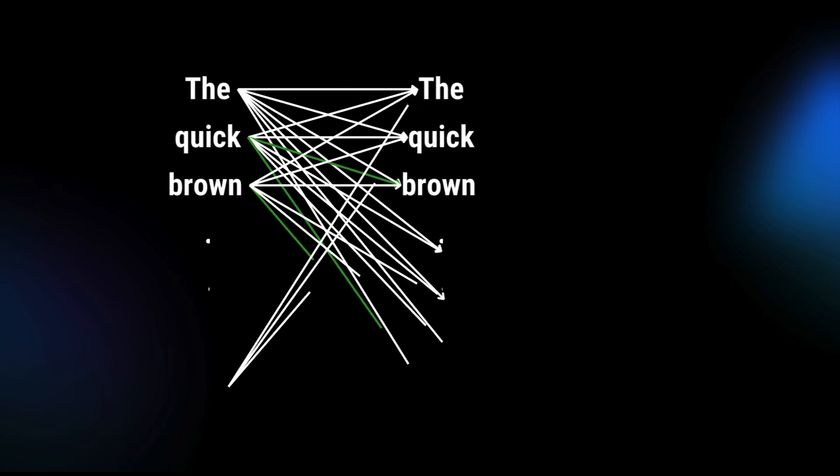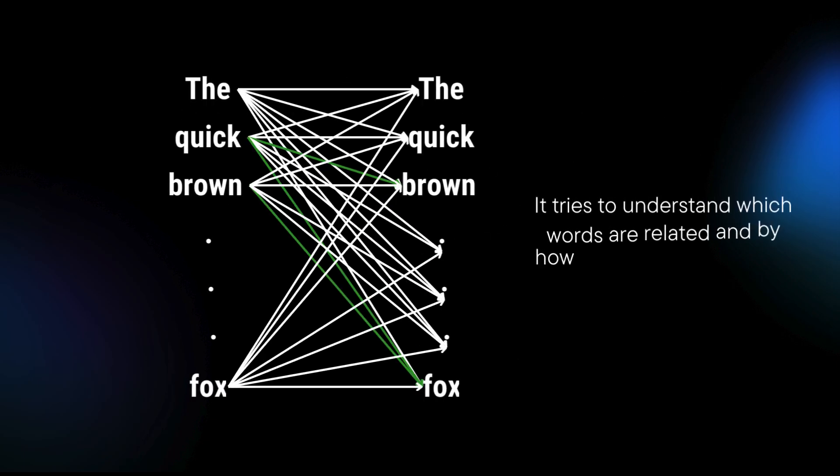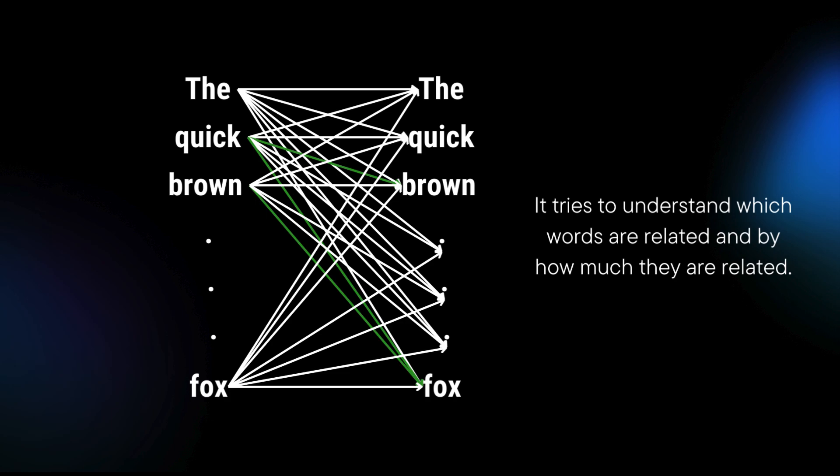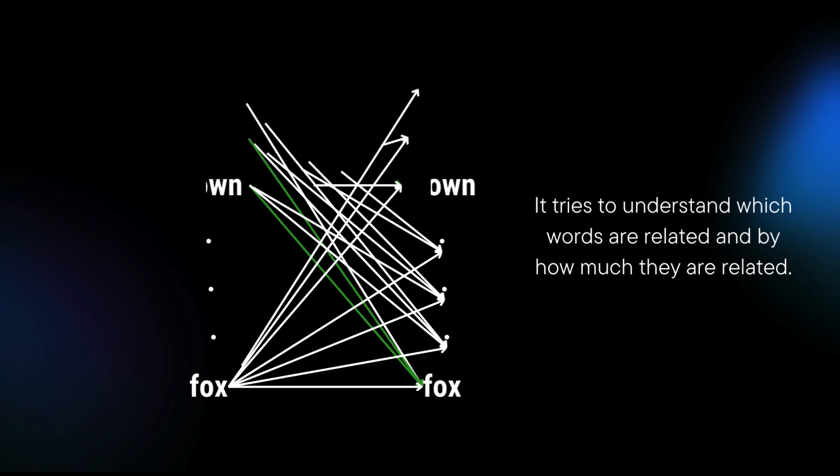One key component is the Self-Attention Mechanism, which enables the model to consider the relationship between all words in a sentence, for example, at once. This is crucial for understanding context and generating coherent, contextually accurate outputs.